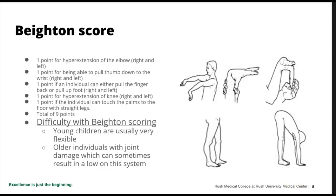A Beighton score is considered positive for hypermobility if it's greater than five. One difficulty with the Beighton score is that young children are usually very flexible, and older individuals — even if they were very flexible when younger — may have damaged joints and had surgery, and may even have a negative Beighton score. So it's difficult to be accurate under age five or in patients over 50.